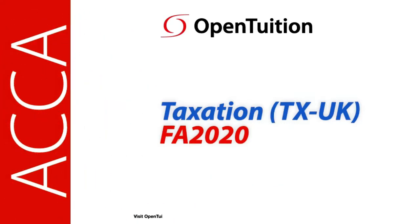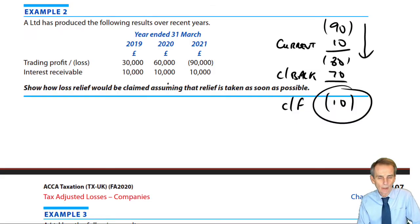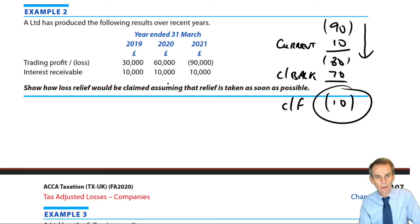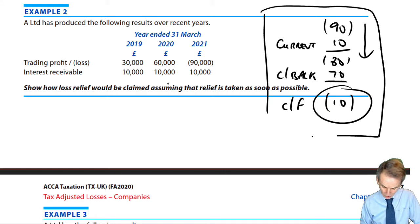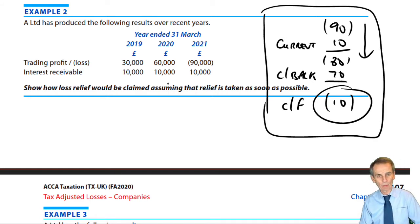This is a lecture from Open Tuition. To benefit from the lecture, you should download the free lecture notes from opentuition.com. At the end of our first session here in chapter 18, we looked at example two, and as you can see, we've got our basic loss memorandum working here, still showing in relation to that example.